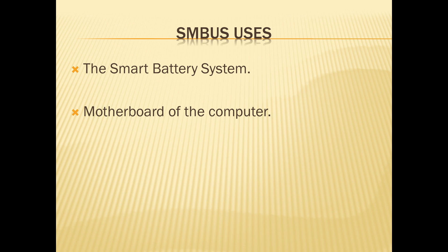The SMBus uses a smart battery system. The smart battery system is composed of a smart battery which is used to read its chemistry levels, its charge, and other systems. It usually consists of hosts, a smart charger, and a smart battery. It is the easiest and most efficient way to implement a battery management system for portable devices such as a laptop, portable computer, or cellular phone. The motherboard of the computer usually uses the SMBus to communicate between the switch and the device, and it is also used in system management mode, which communicates by sending commands between the different devices of the system.